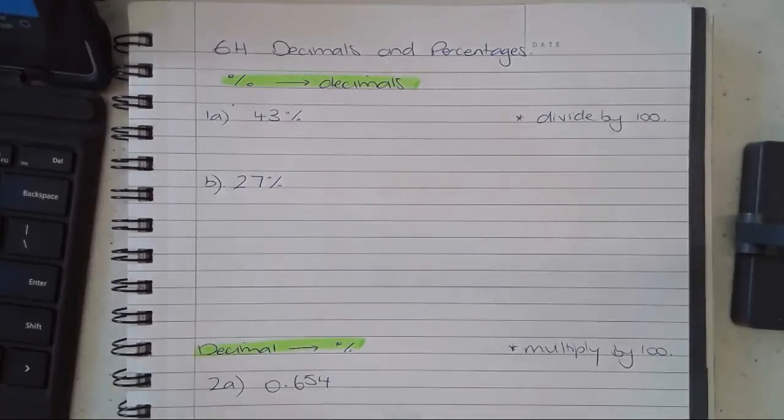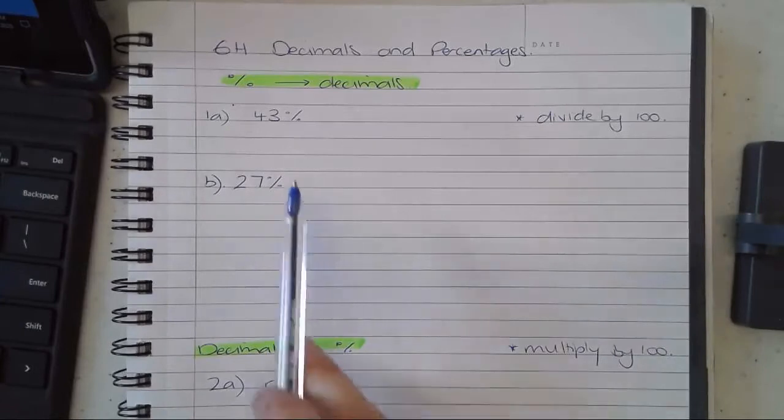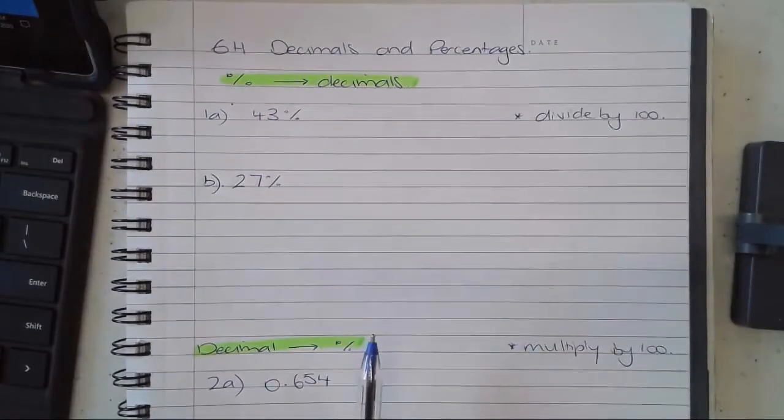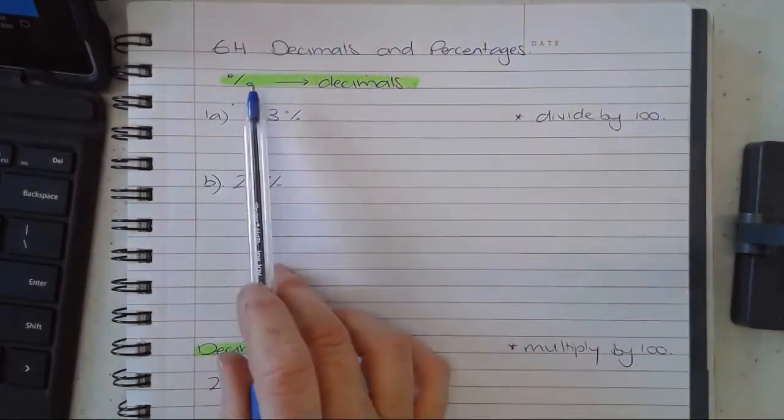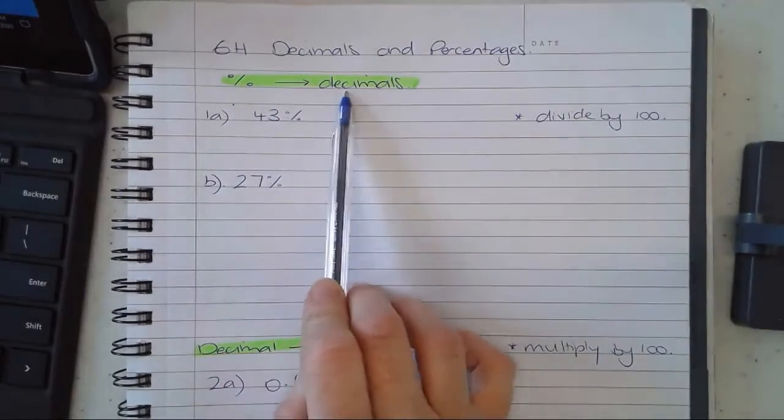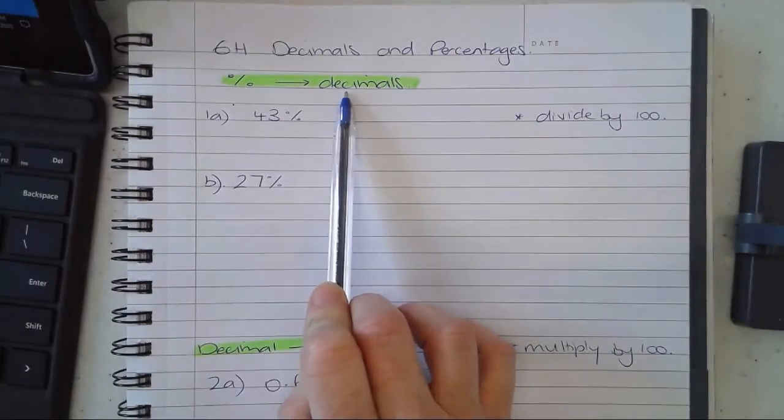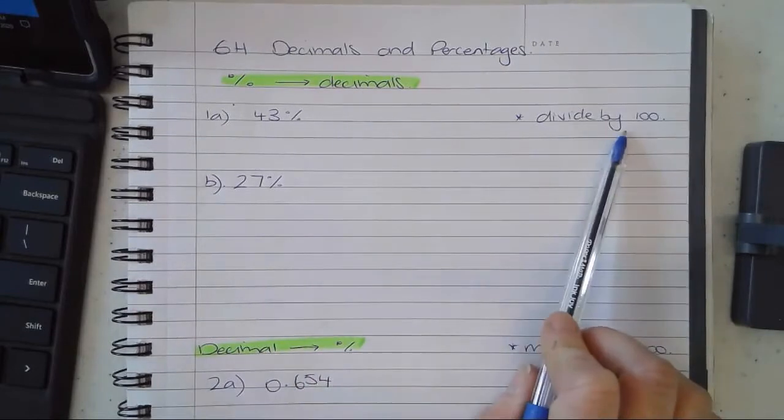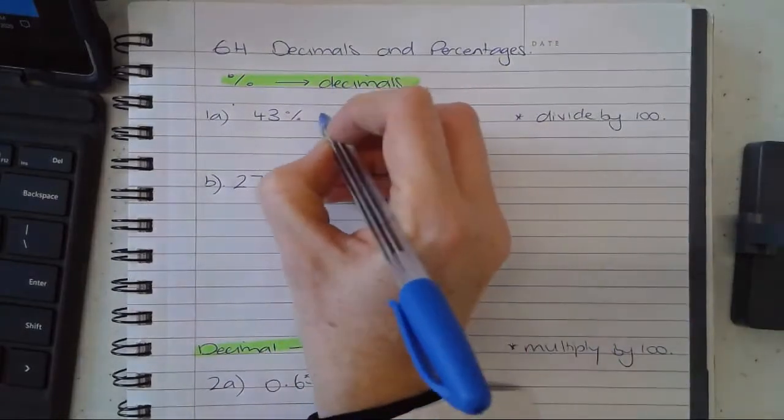I've got a video about decimals and percentages - this is 6H in your textbook. Firstly, if I'm converting from a percentage to a decimal, it's very straightforward. We're essentially dividing by 100.